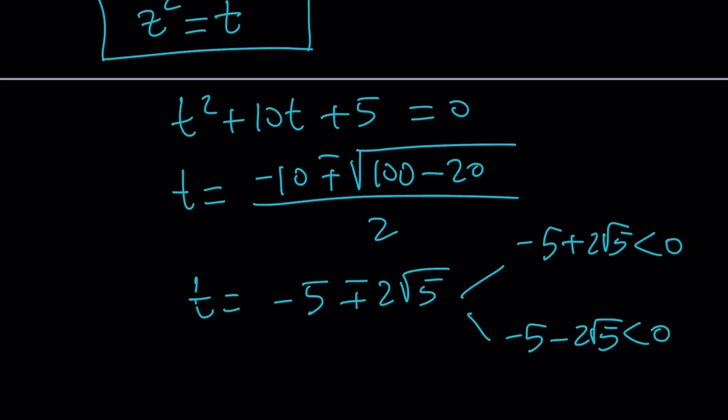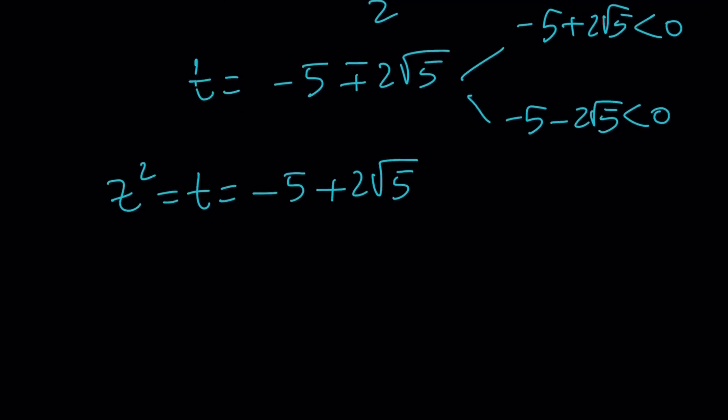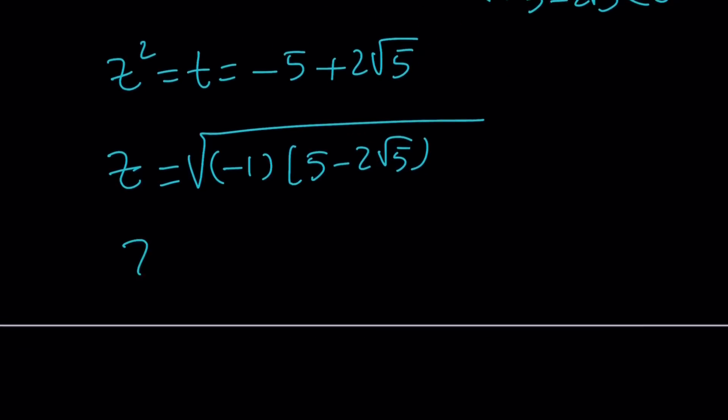For example, if you just take one of these, z^2 is equal to t, which is -5 + 2√5. And then we have to write it as follows. We have to consider two roots. One of them is going to be, and since this is a negative quantity, under the radical, it can be written as -1 times (5 - 2√5).